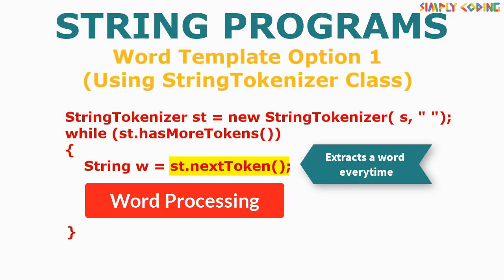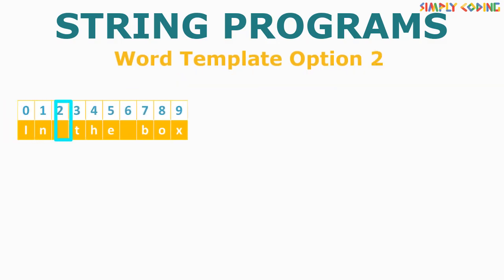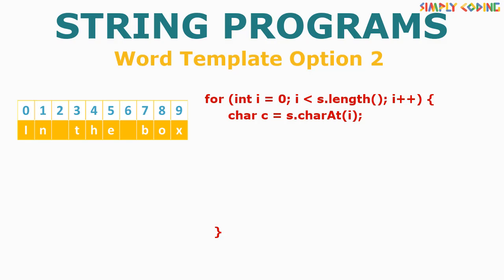You can use this as a template for any of our word programs. If you are not using StringTokenizer, I will now explain how you can read a string character by character and form a word. We start with our character template which takes a string and gives us character by character. In the same template, we will first define a string variable w outside the loop which will hold our word every time. We will read character by character and check if the character is not a space. If it is not a space, we will just add the character to the variable w.